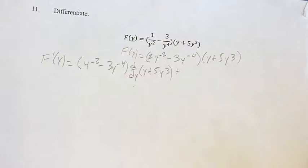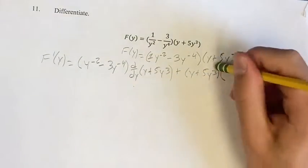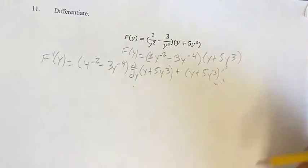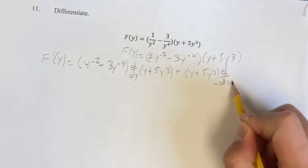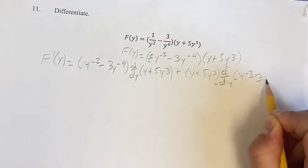Then we do it the other way where we have the second term times the derivative of the first term. This is the full derivative and then we can simplify it to get our final answer.